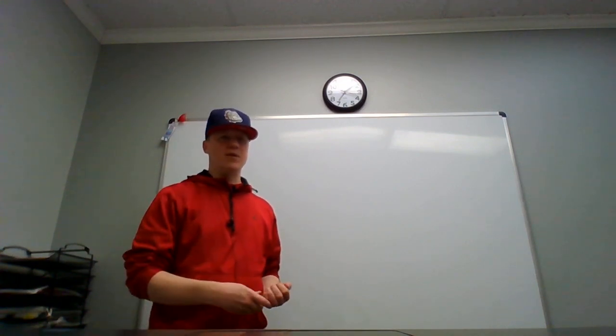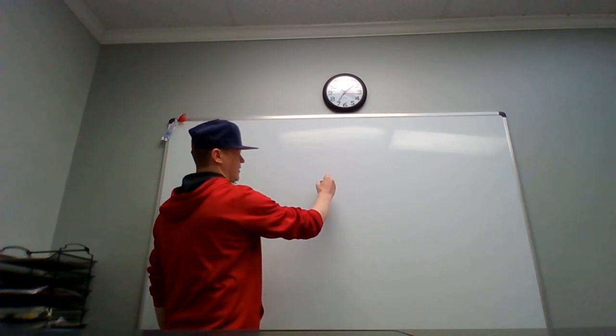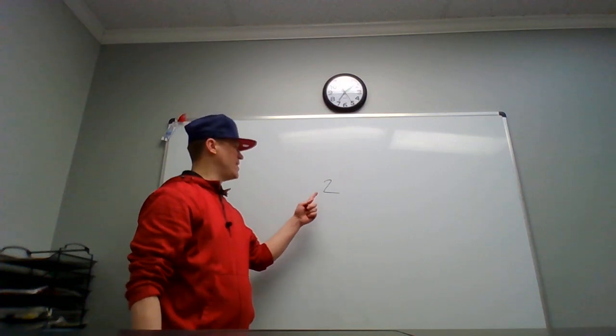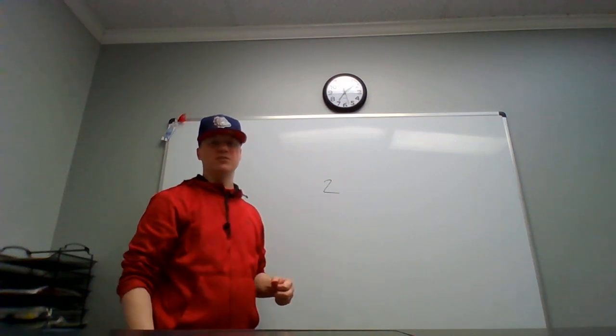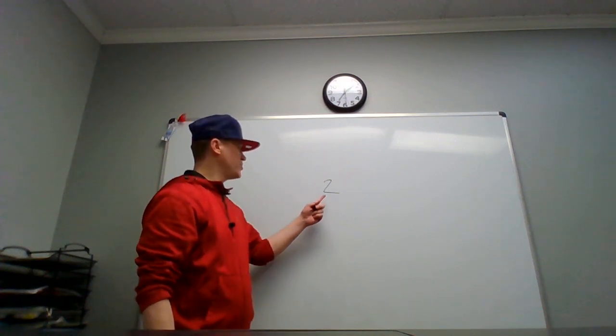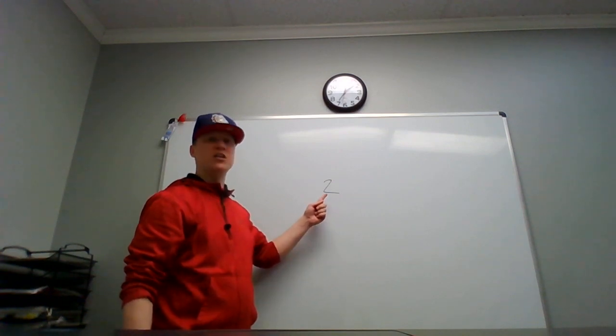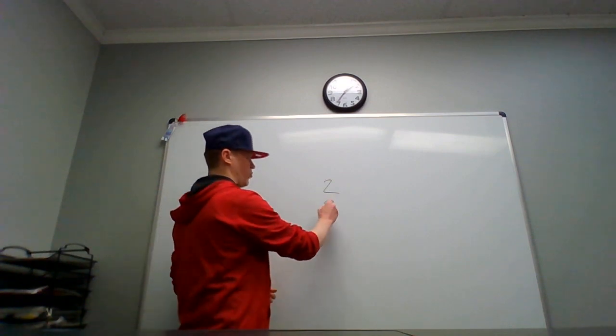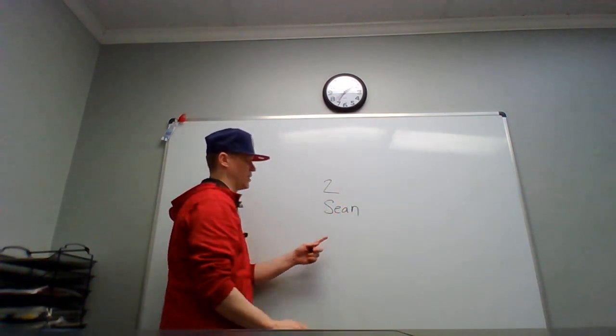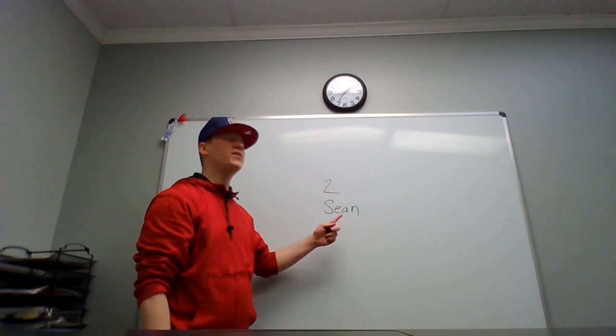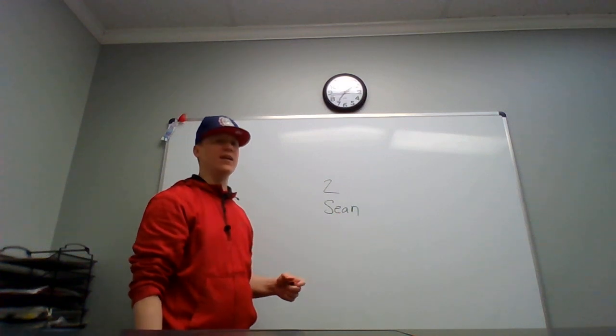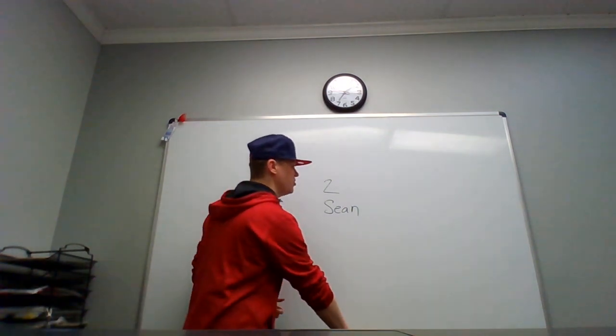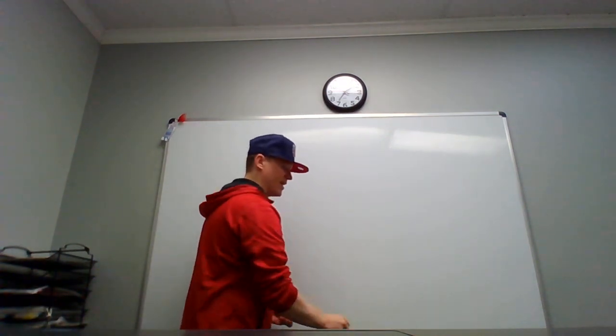When we look at something like the number two, we write it on the board like this. This is not actually the number two, right? The number two is a concept. This is a numeral two. It's no different than if you knew someone named Sean and you wrote Sean's name on the board. Is this Sean? No, this represents Sean. And two is what represents a concept that the human mind has created.